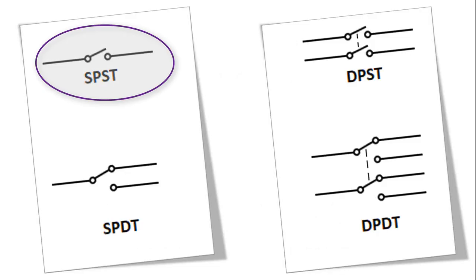An SPST, or single pole single throw switch, is the simplest form of mechanical switch. It is a simple on-off switch with one input contact and one output contact. It switches a single circuit and can either make (on) or break (off).